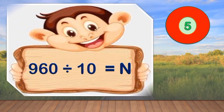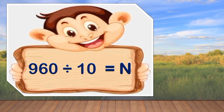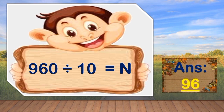Number 2. 960 divided by 10 is equal to N. Your 5 seconds starts now. Go! Time is up. And your answer, children, is? Very good! It's 96.